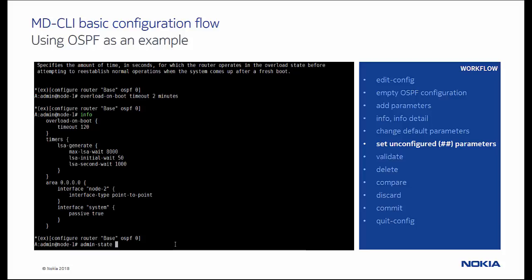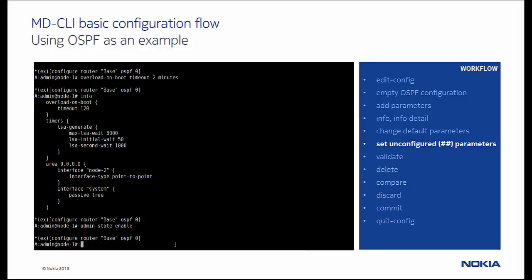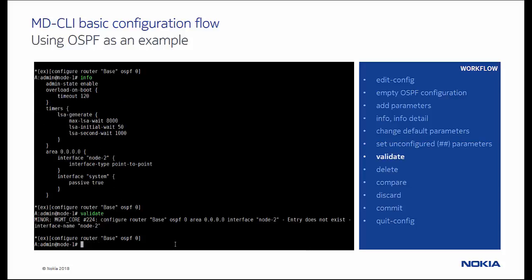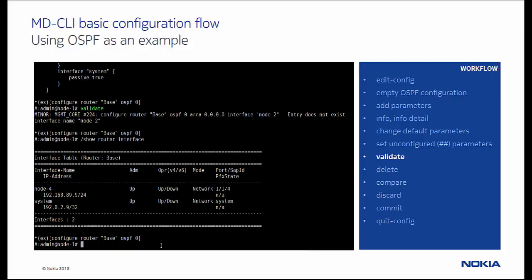Lastly, we enable the OSPF admin state, and the OSPF candidate configuration is ready for validation. We see however that the validation fails, indicating that the interface with the name node2 does not exist. Using the show router interface command, we see that we should have used interface node4 instead.